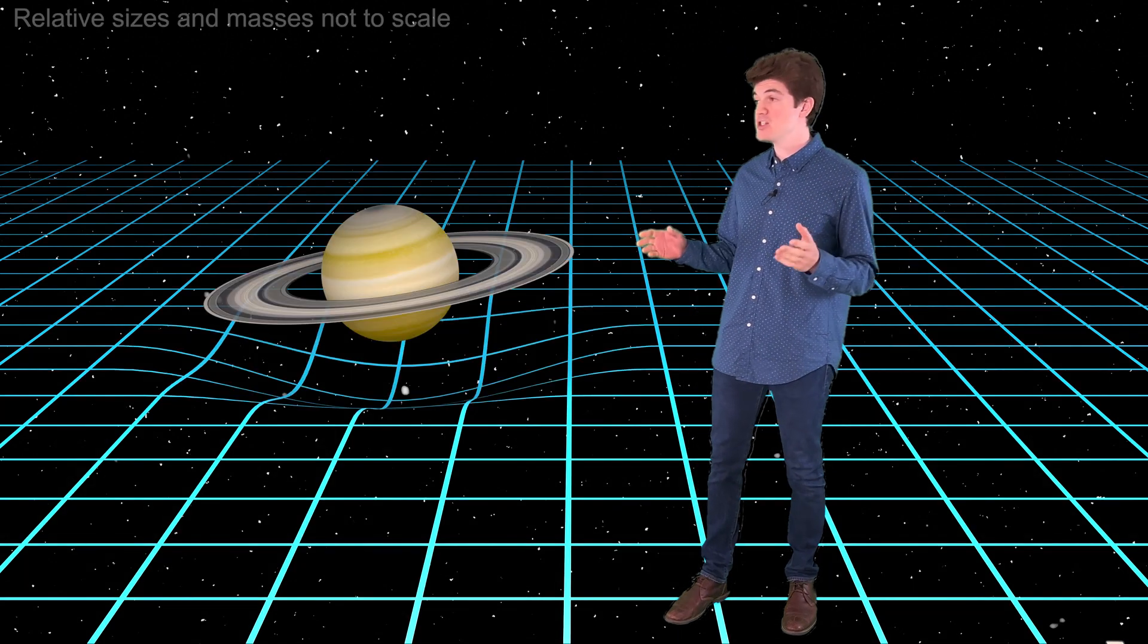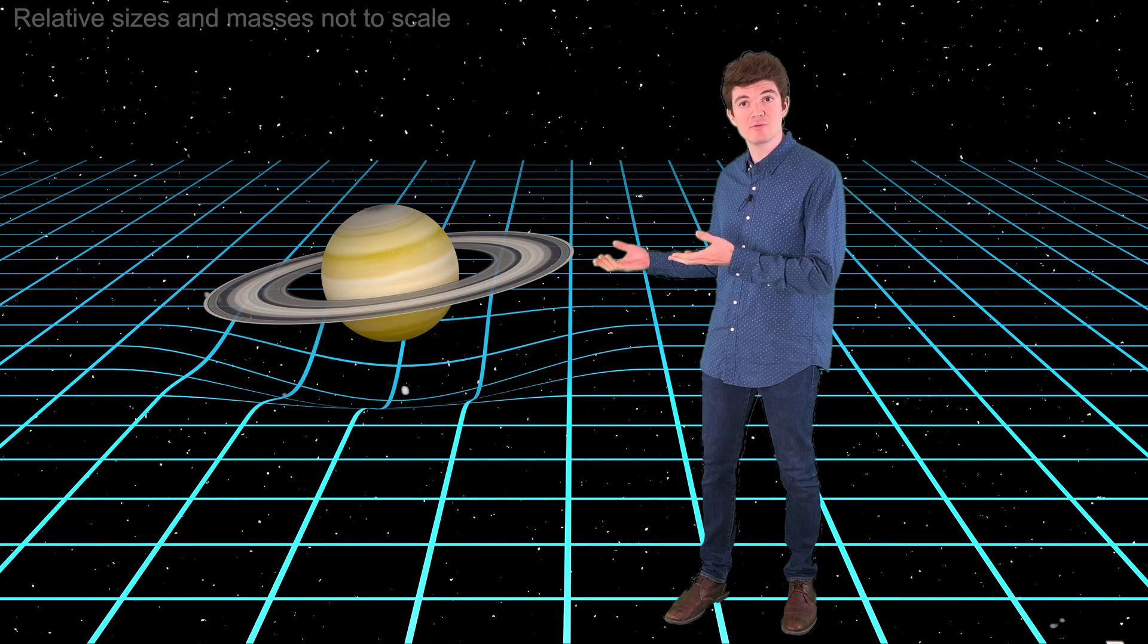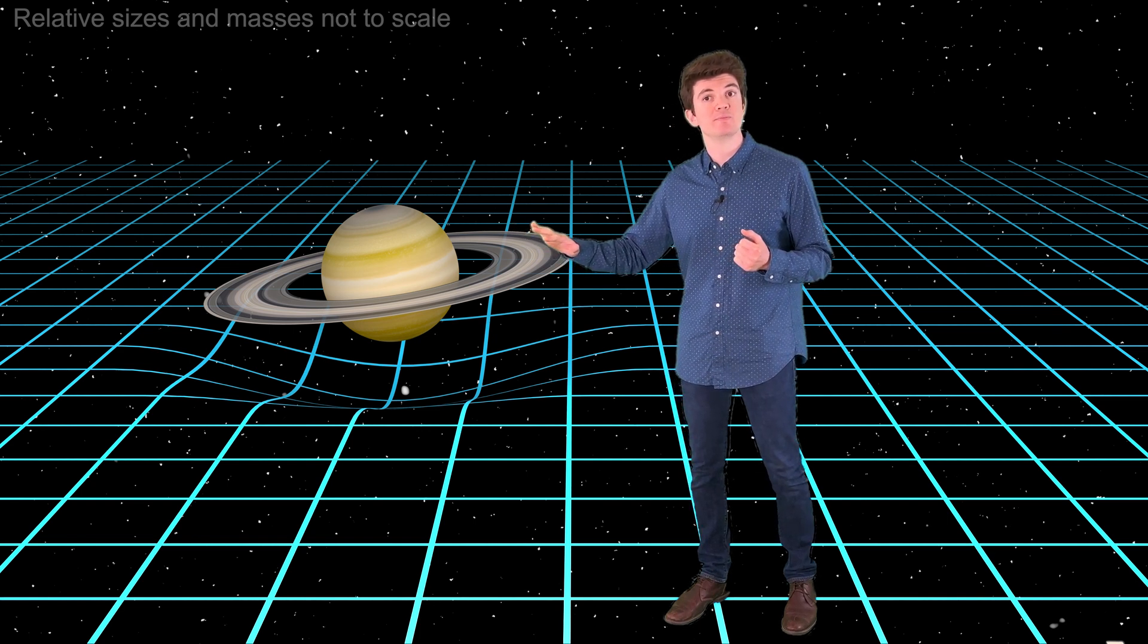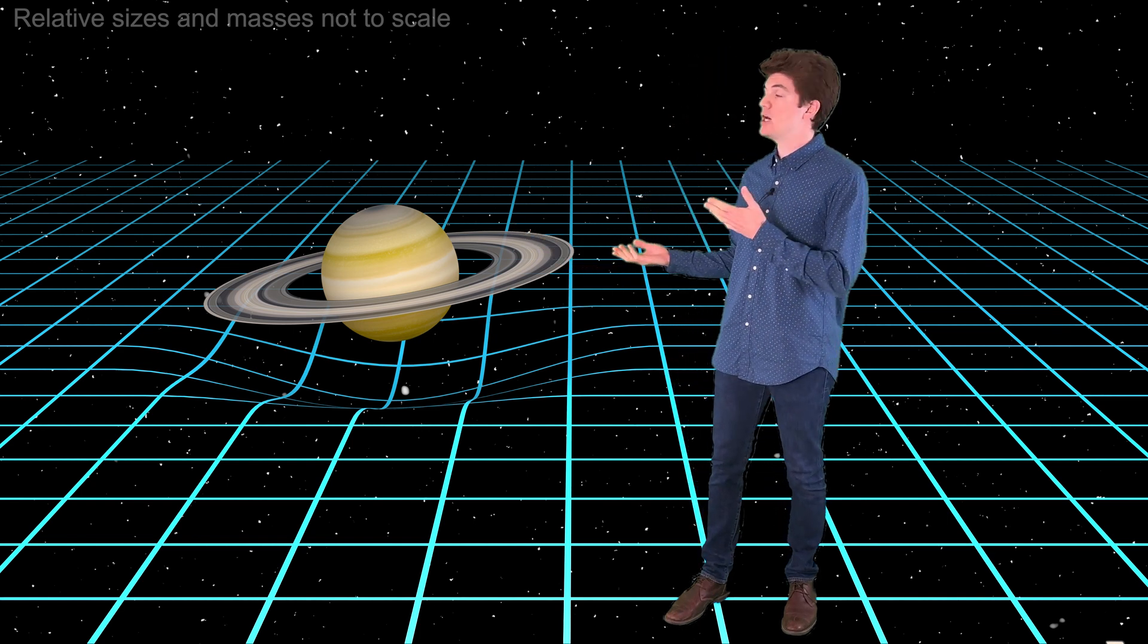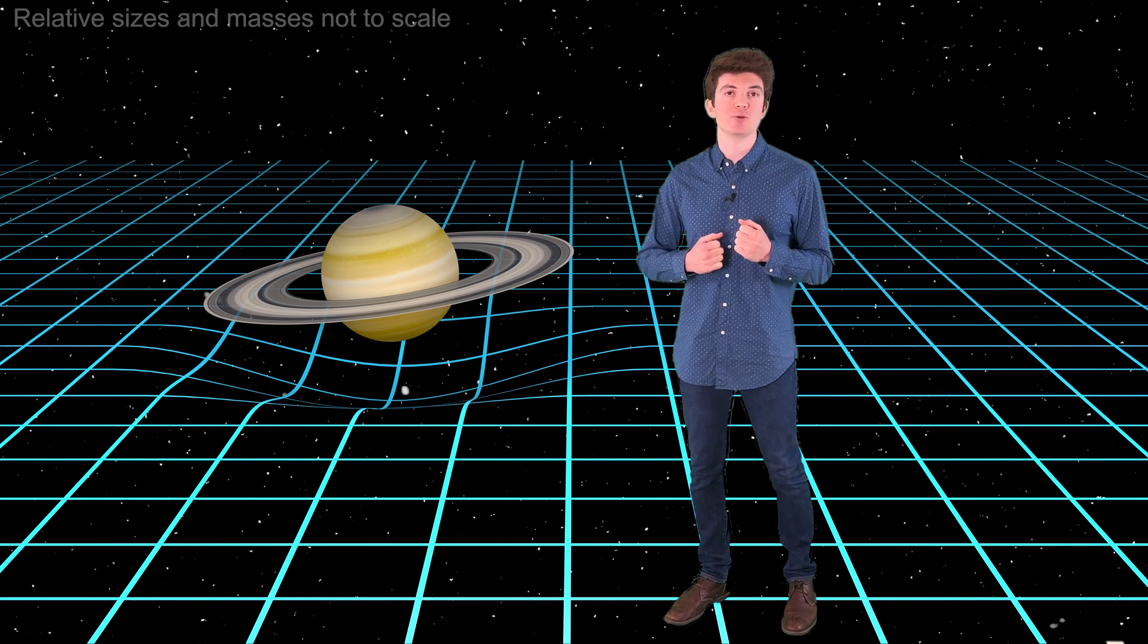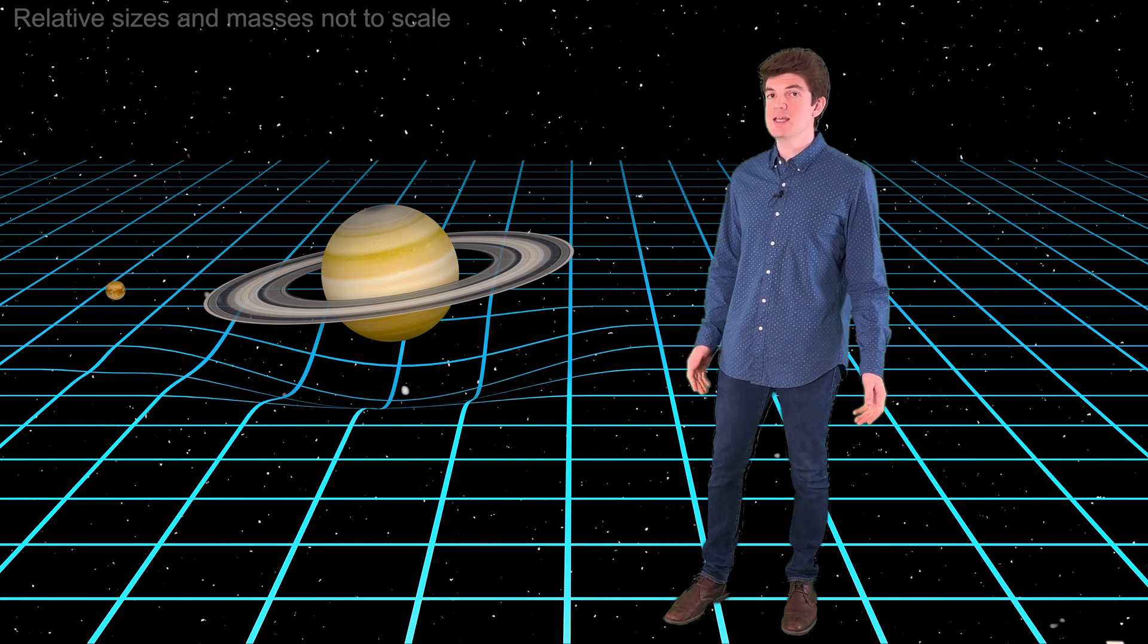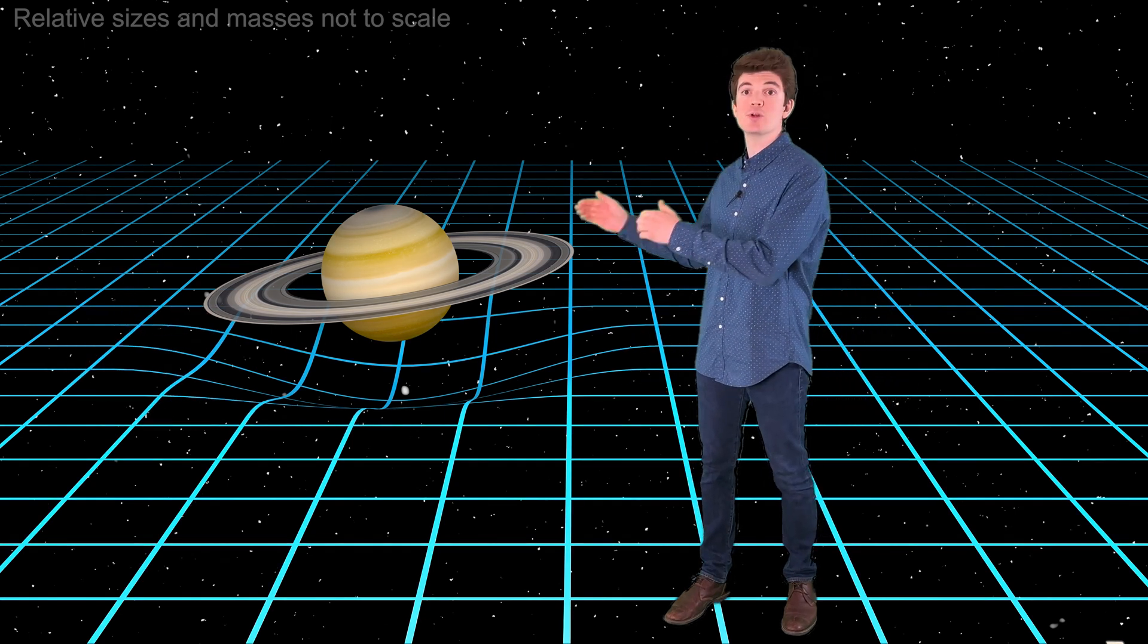But every being that lives in this universe is stuck on this grid. And fundamentally, objects with mass, like a planet for example, warp this grid. If we introduce another massive object into this universe, like a moon, its path is bent toward the planet.